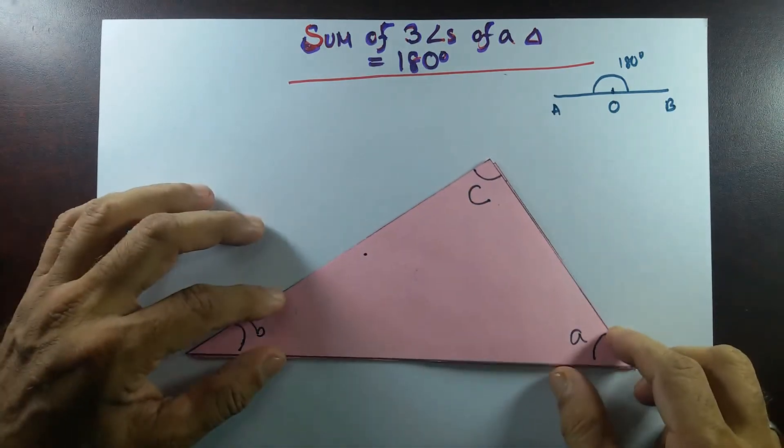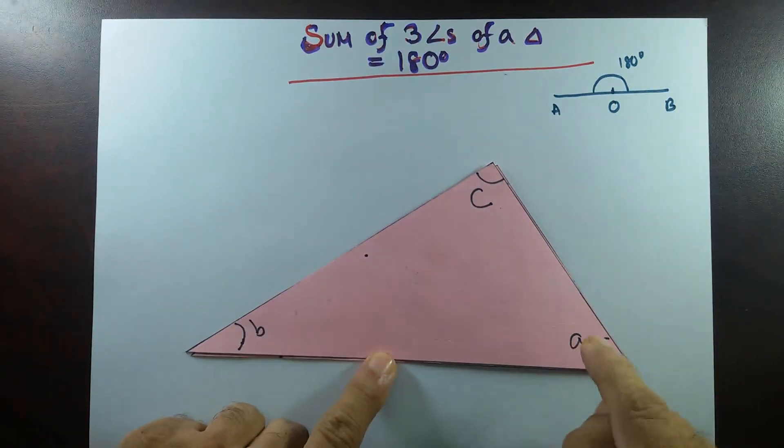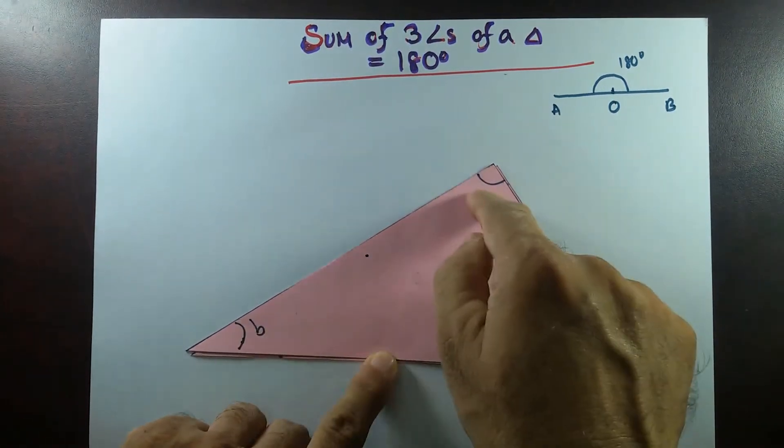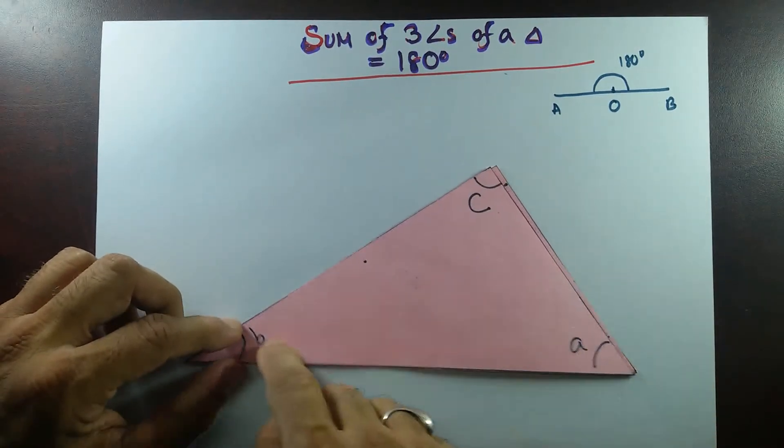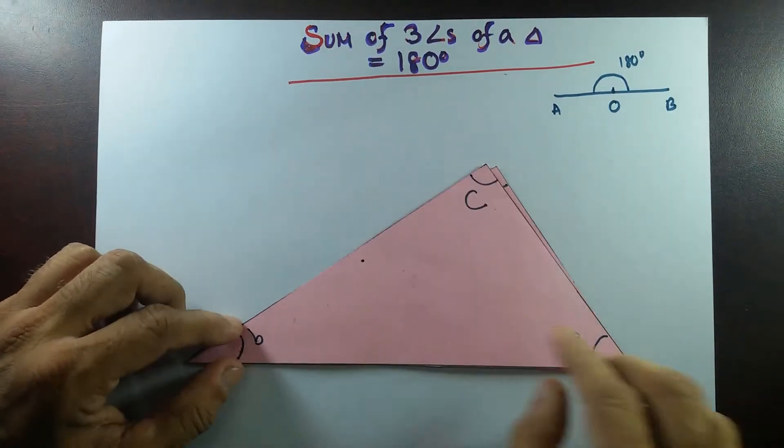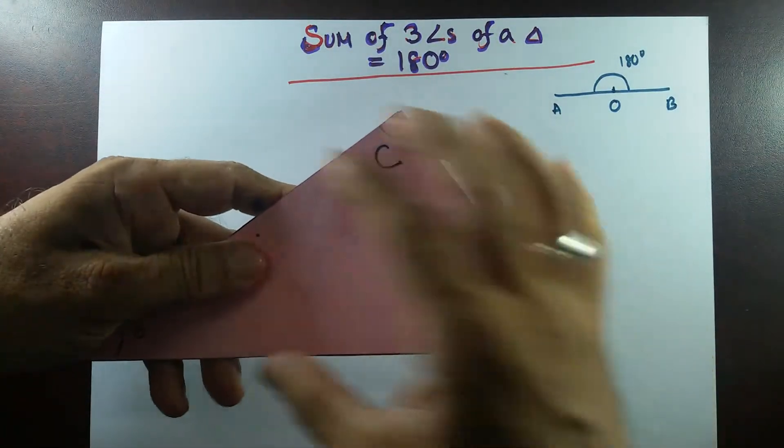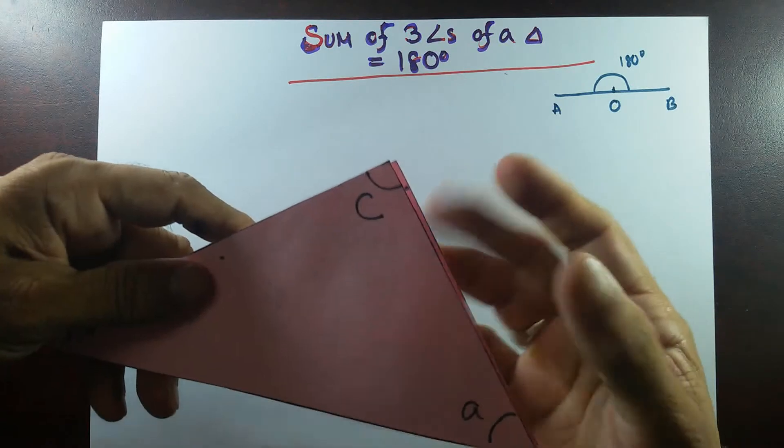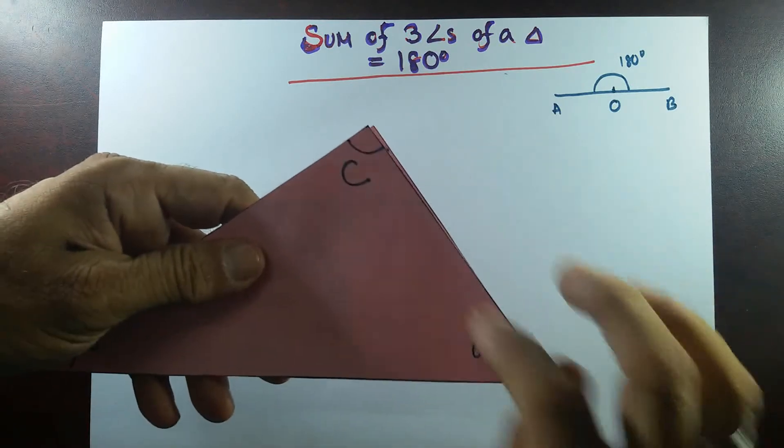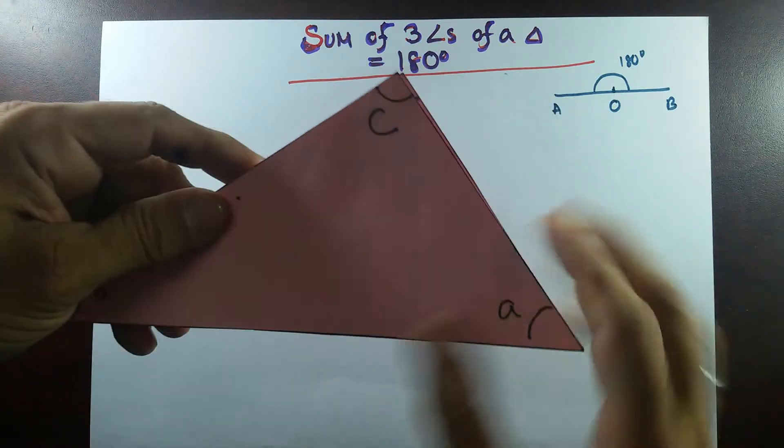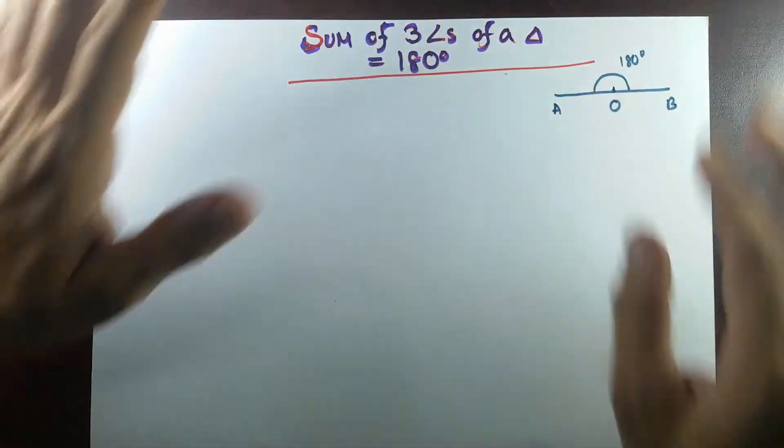I have a triangle over here and you can see that I have three angles A, B, and C. I'll show you that the sum of these three angles equal to 180 degrees. I have two congruent triangles, same shape, same size. The triangle underneath has the measurement of the angles. I'm not going to show it right now. I'll show it later on. I'll just put it aside.